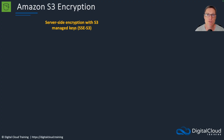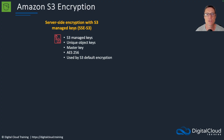There are a few different options for how we can encrypt data with S3. Firstly, we've got server-side encryption with S3 managed keys, also known as SSE-S3. This uses S3 managed keys, which are AWS managed. It provides unique object keys, a master key, and AES-256 encryption, and this is used by S3 default encryption. If we don't change any settings and just create a new bucket, it will be encrypted using SSE-S3 by default.